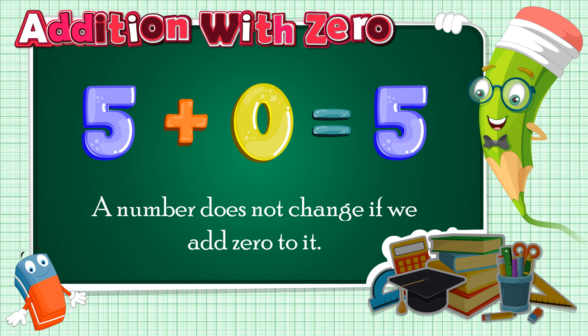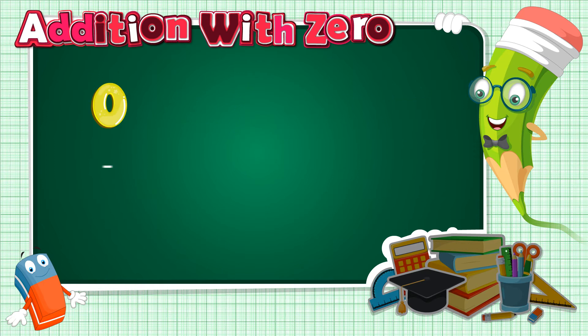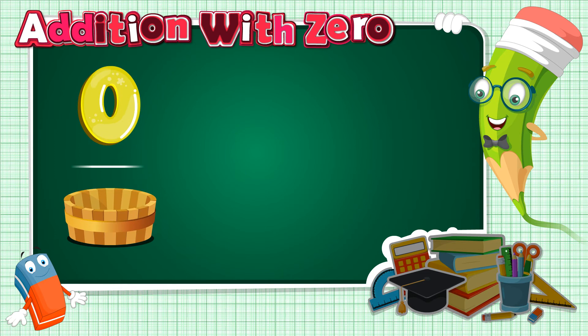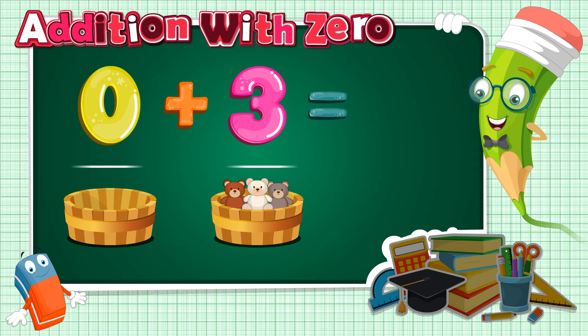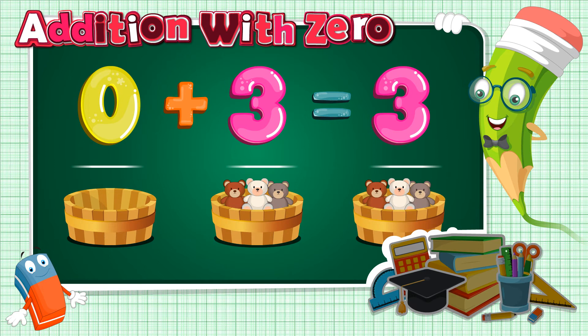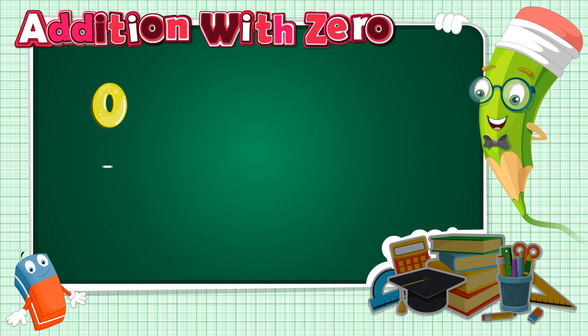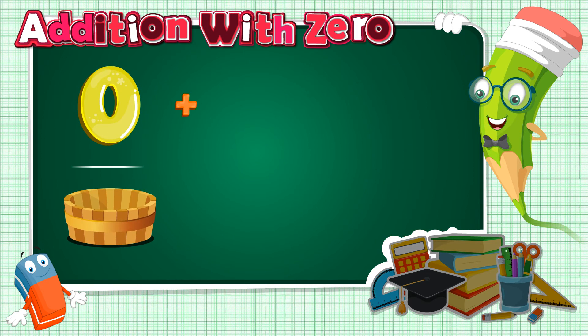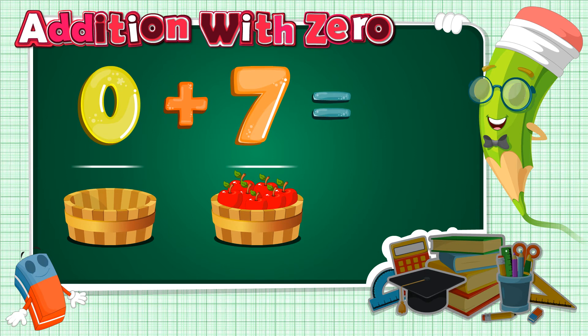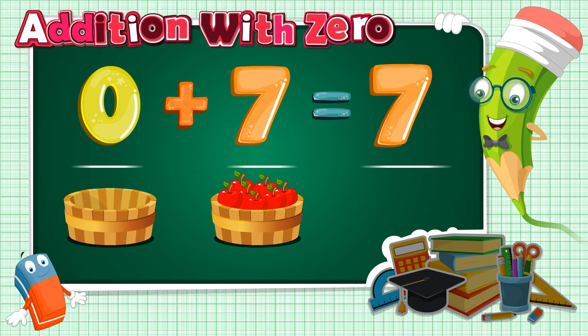Now, let's see other examples. 0 plus 3 is equal to 3. 0 plus 7 is equal to 7.